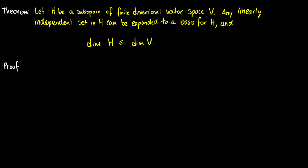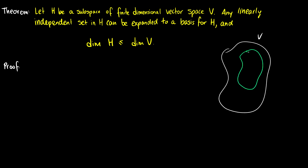What this says is: if we take a vector space V and some subspace H within it, if we have a set of vectors in H that are linearly independent, we can expand that set until it covers all of H, and we're never going to get a dimension bigger than V.